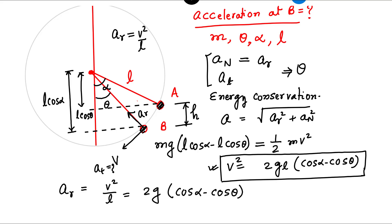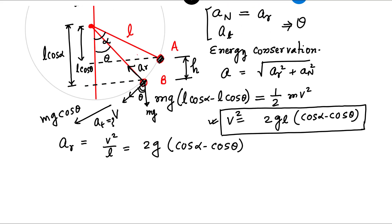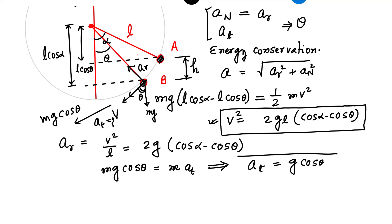For tangential acceleration, it equals dV/dt. We calculate it using force divided by mass. The gravitational force mg acts on the bob, and the component in the tangential direction is mg cos theta. Applying Newton's second law, mg cos theta equals mass times tangential acceleration. Therefore, tangential acceleration equals g cos theta.